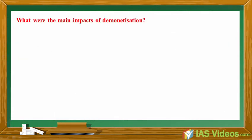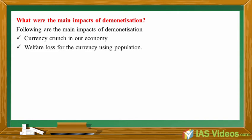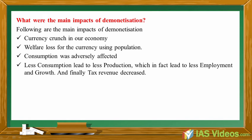What were the main impacts of demonetization? Following are the main impacts: currency crunch in the economy; welfare loss for the currency-using population; consumption was adversely affected; less consumption led to less production, which in turn led to less employment and growth; and finally, tax revenue decreased.